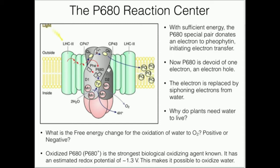That electron hole — in other words, P680 is devoid of an electron — gets that electron back by siphoning electrons from water. Remember that water is a substrate of photosynthesis, and photosynthesis produces oxygen. This is why plants need water to live. Besides creating turgor pressure in the stem and allowing it to have structure, water is used to feed electrons back to P680 — the electrons it gave up. It has to get electrons back, otherwise it's going to stall and the plant will die.